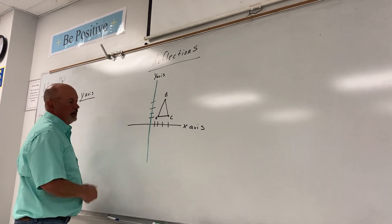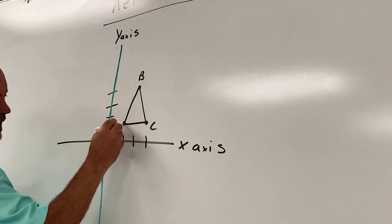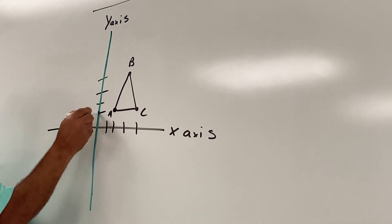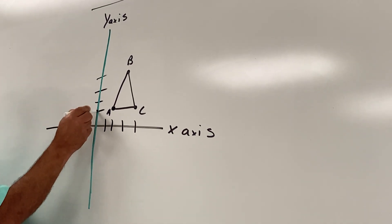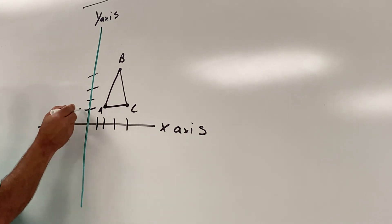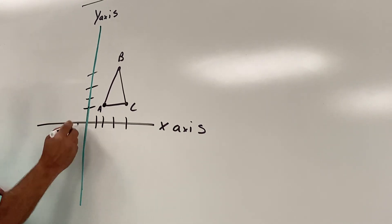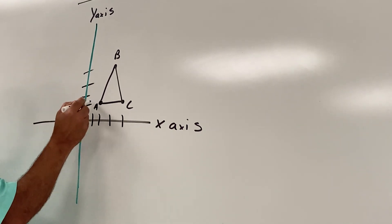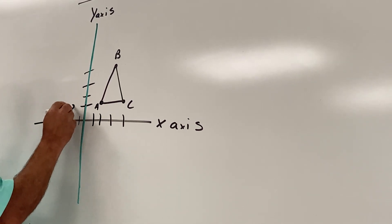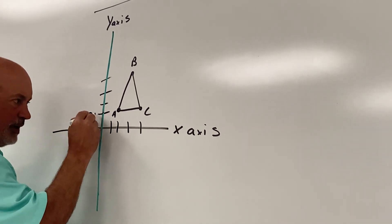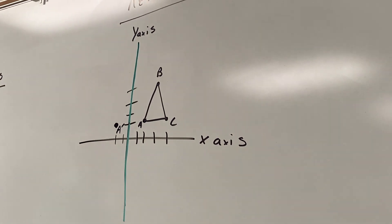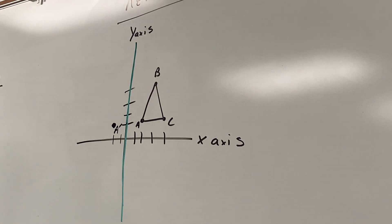Let's count: how far is point A from the y-axis? Two. We need to go two straight across from where it currently is. So if it's two to the right, we need to go one, two to the left. A prime is going to be right here.